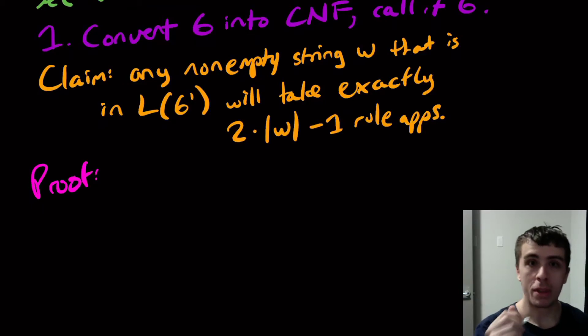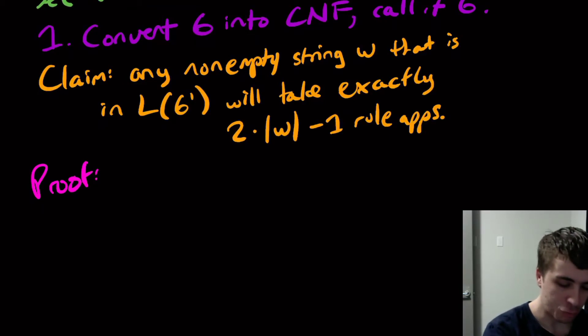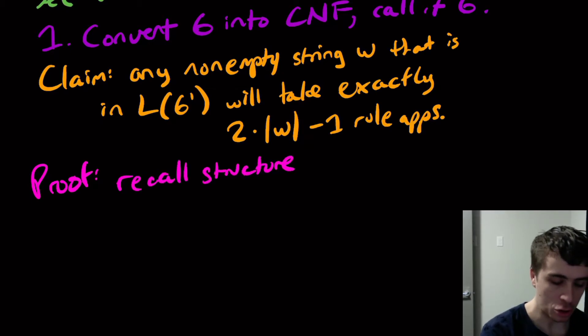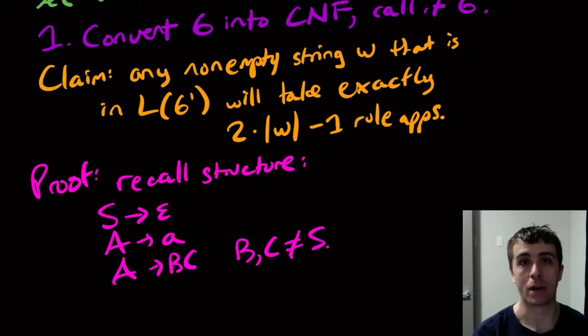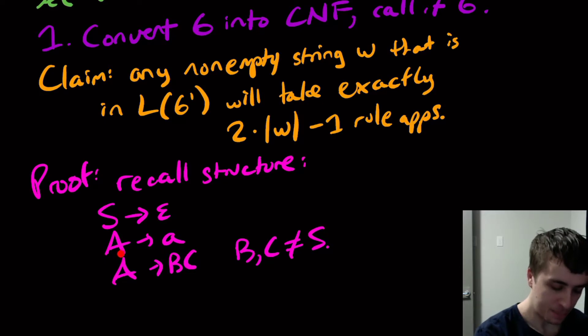So one thing to keep in mind is, let's recall the structure of a grammar in Chomsky normal form. So it's going to be S goes to empty, A goes to little a, and A goes to BC, where B and C are not the start variable. That's the structure of grammars that are in Chomsky normal form. So note here that we have the only way to make a terminal because the string is not empty is this one right here. This is the only way to ever make a terminal.